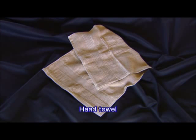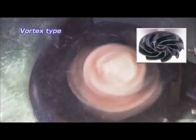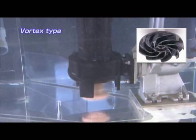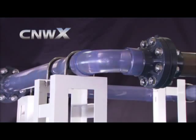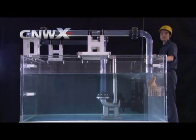First, let's try a towel. Clogging occurs with the conventional vortex-type pump. What do you think will happen in the case of the non-clog scroll submersible pump? As you can see here, even an item such as a towel, which is liable to become entangled, passes through the pump without clogging it.